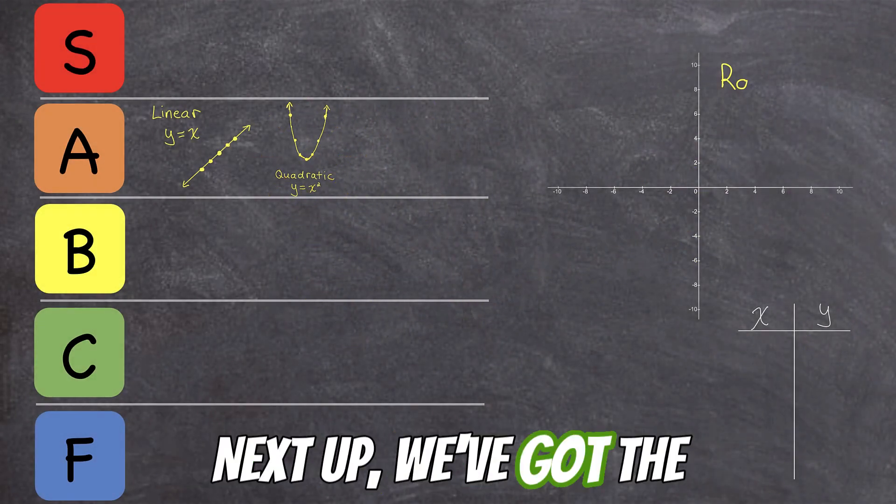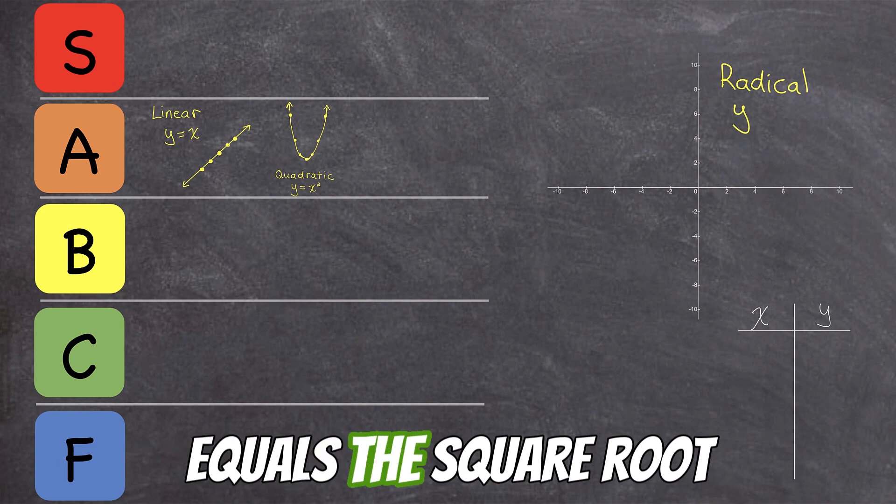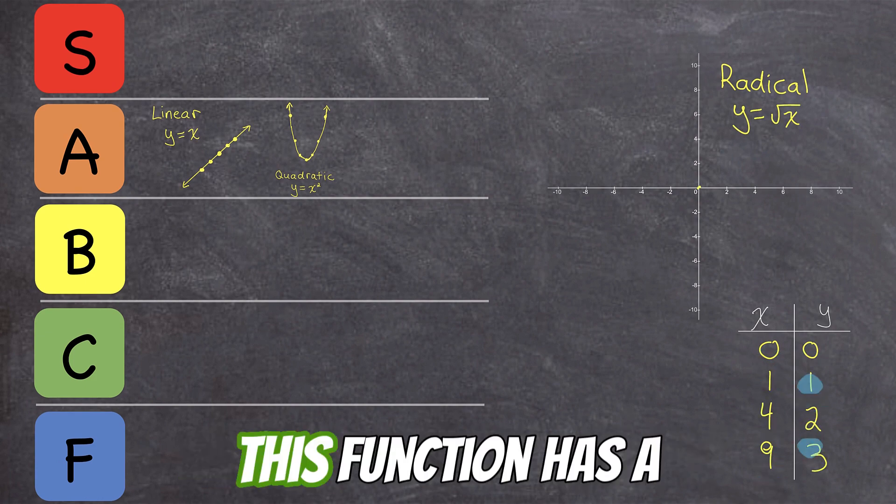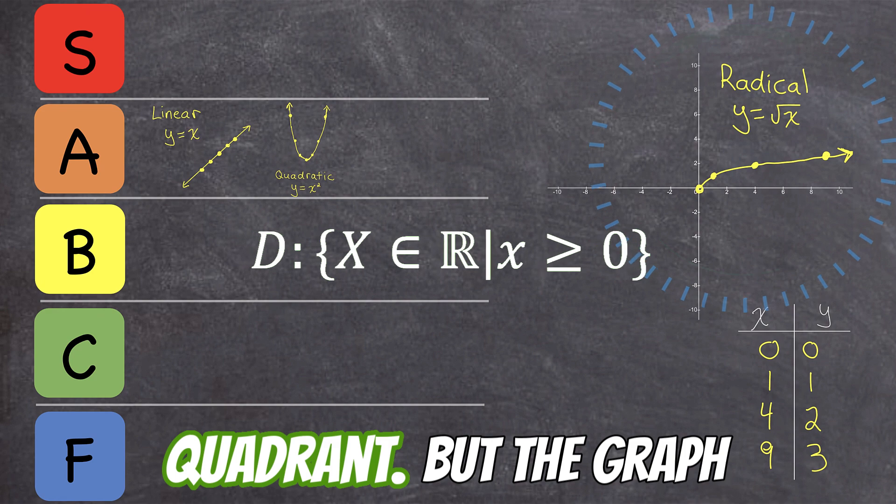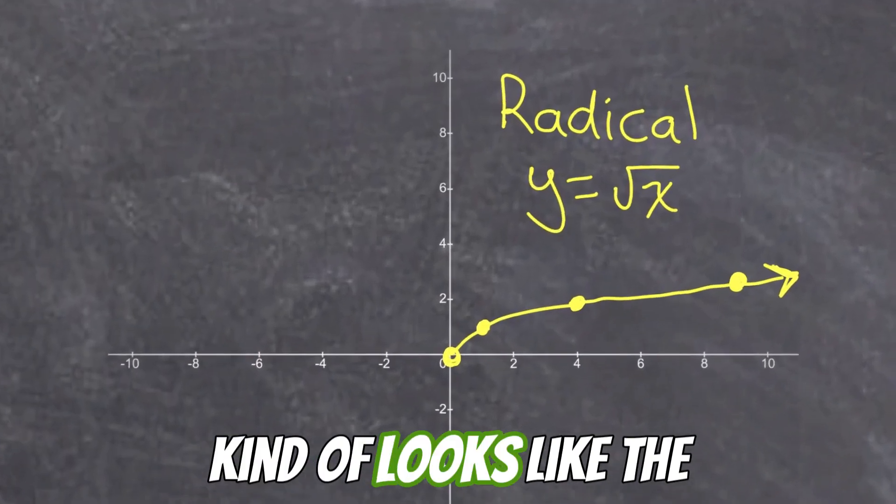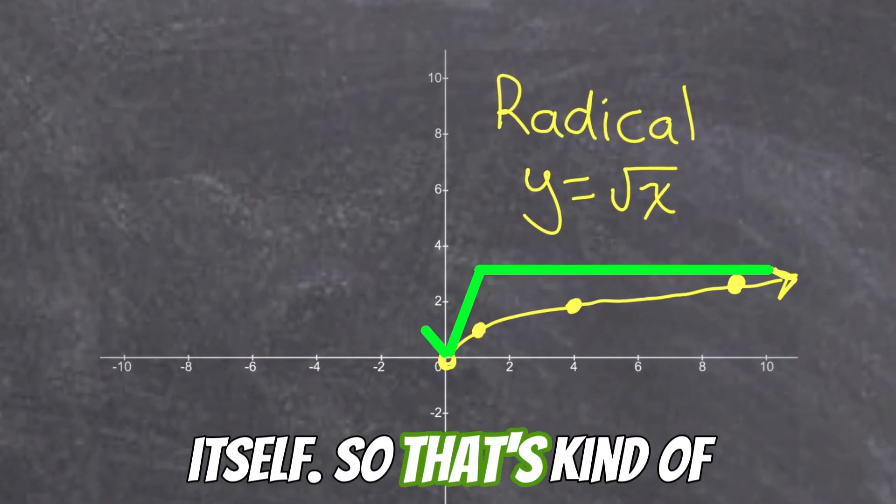Next up, we've got the square root function, y equals the square root of x. This function has a restricted domain, and it only lives in one quadrant. But the graph kind of looks like the square root symbol itself, so that's kind of neat.